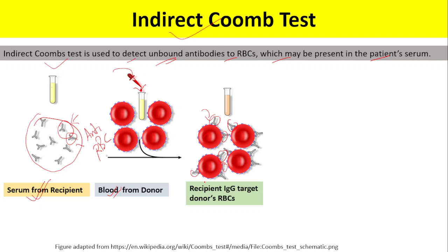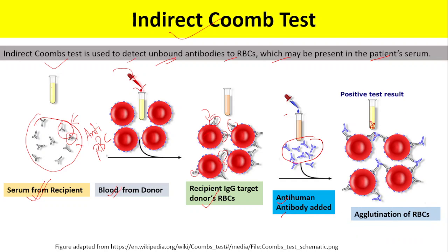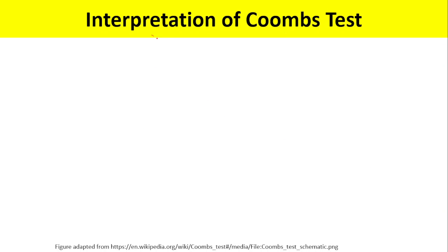Essentially, the recipient's antibodies target the donor's RBCs. In the next step, we add Coombs reagent (anti-human antibody) and incubate. This anti-human antibody forms a bridge between the anti-RBC antibodies, resulting in agglutination of RBCs. Agglutination indicates a positive Coombs test. The indirect Coombs test can be used for blood transfusion to check if two blood types are compatible — checking for any reaction between blood from the recipient and blood from the donor.